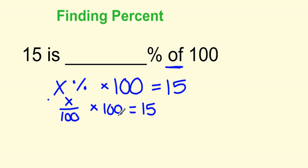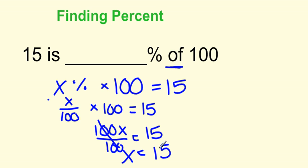x over 100 times 100, we can multiply these together. So we have 100x over 100 equals 15. And these two cancel out, we're left with x equals 15. That's kind of a coincidence. So 15 is actually 15% of 100.